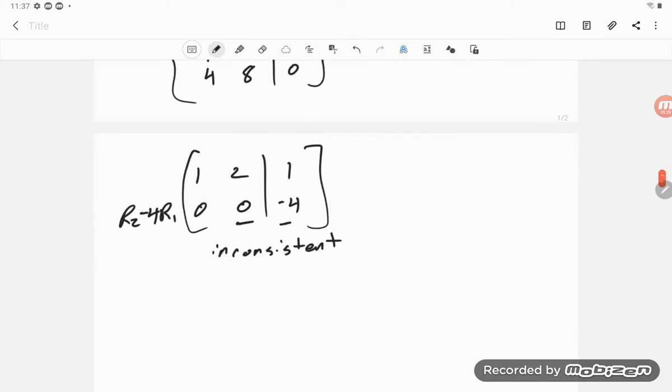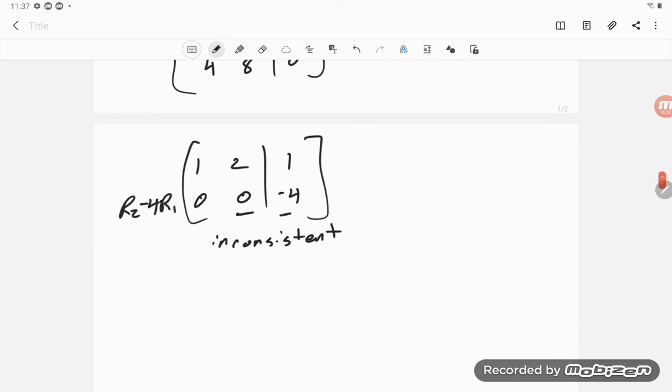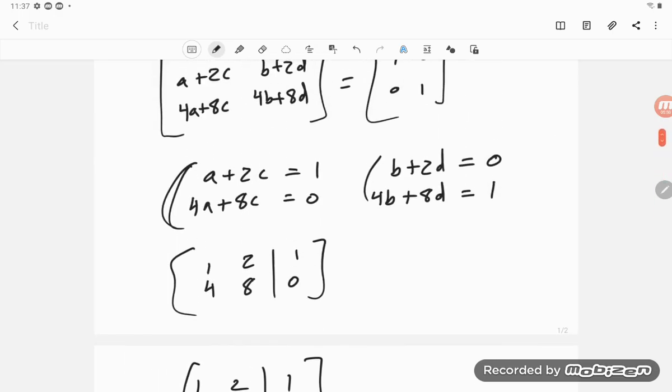And that indeed is inconsistent, so I can't find an a and b. So this would say there's no inverse. No inverse.